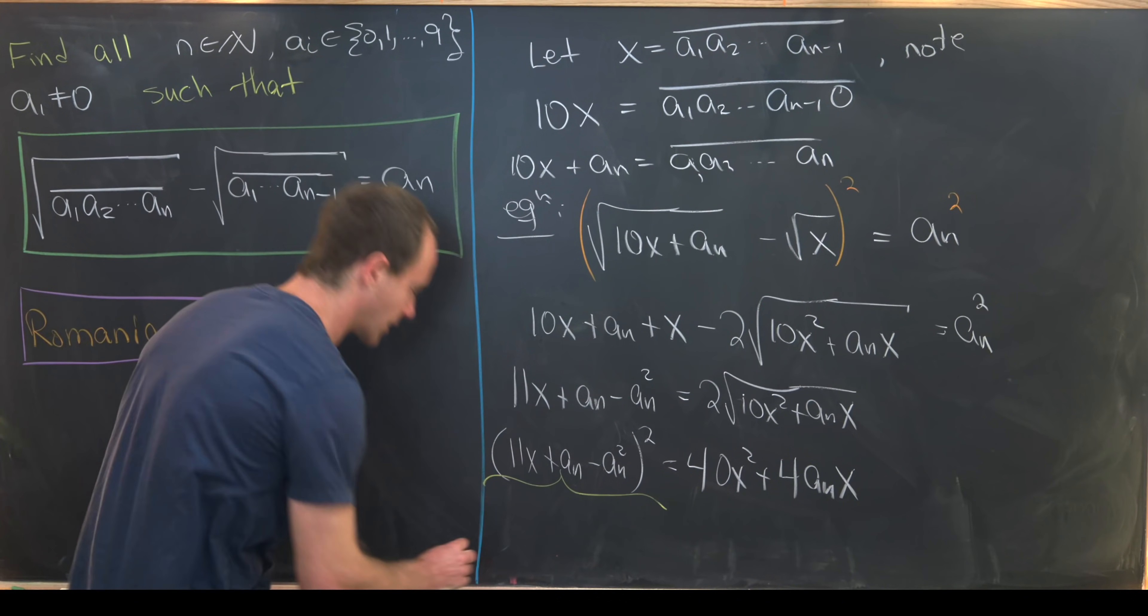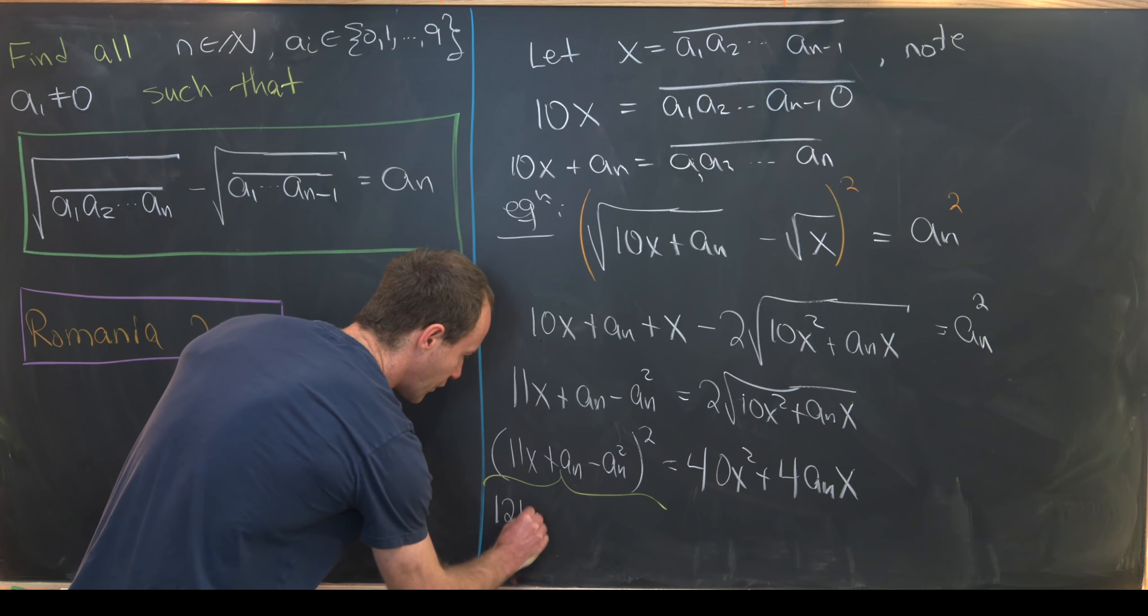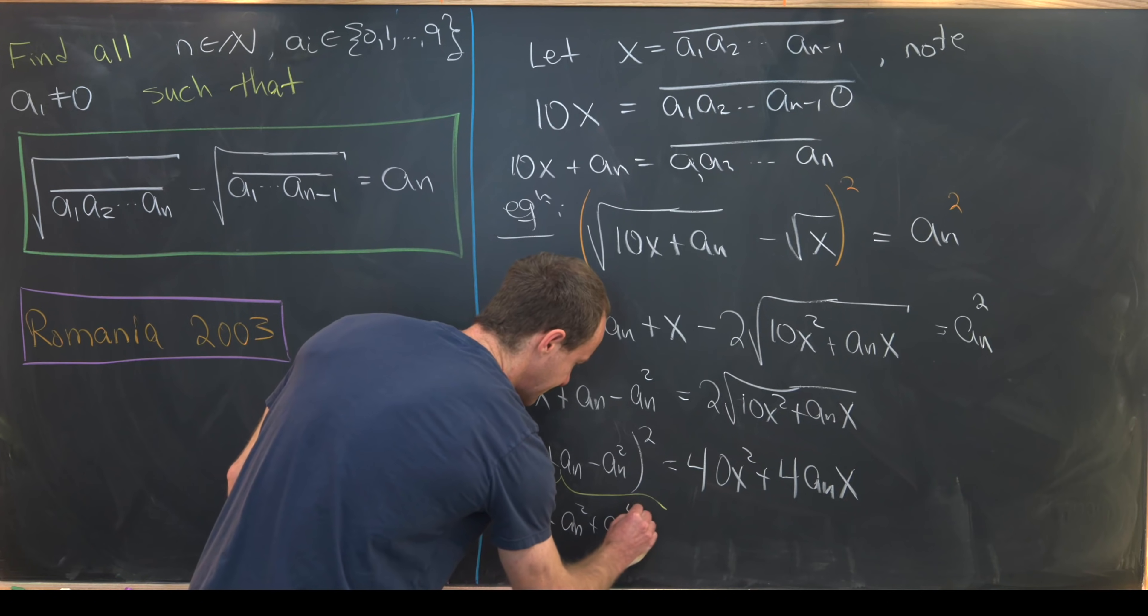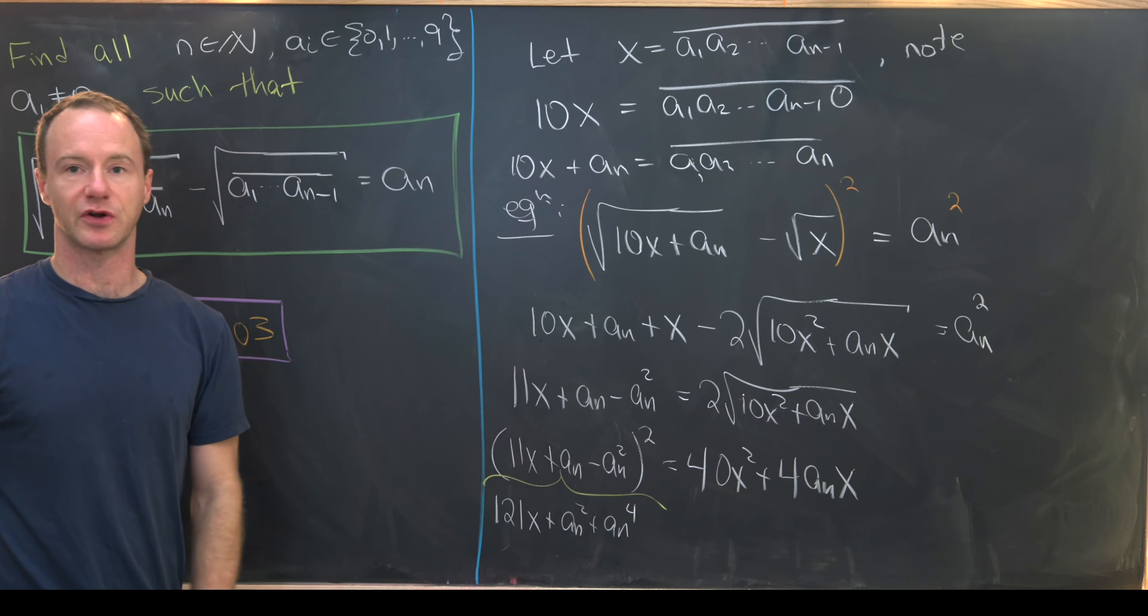Now we just have to go about squaring this guy right here, which is not conceptually that difficult but just requires some care. So that's going to give us 121x² plus an squared plus an to the fourth. So those are all the pure squares.